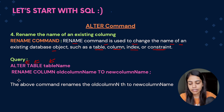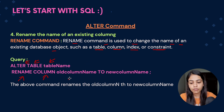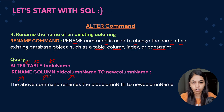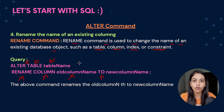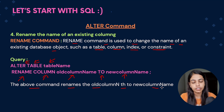The query for RENAME is: ALTER TABLE, then the table name, then RENAME, then specify what you want to rename — table, column, constraint, etc. — then the old column name, then TO, and then the new column name. The above command renames the old column name to the new column name.